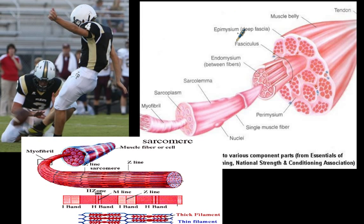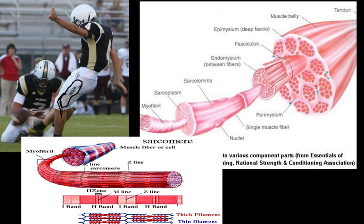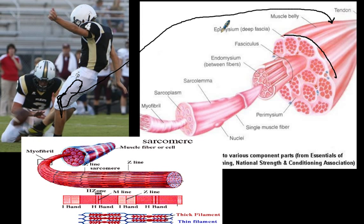We've got a similar diagram here with more labels, and then a diagram we haven't overviewed yet. We have a football player, and we're going to take one of his hamstring muscles — the biceps femoris — which is attached to the ischium of the pelvis and the tibia and fibula of the lower leg, giving the ability to bend the knee. We take that muscle, and here it is: the whole muscle is covered by a connective tissue called the epimysium.